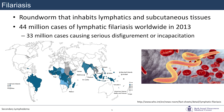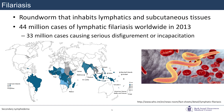On filariasis: we don't see this in the U.S. It's a roundworm that inhabits lymphatics and subcutaneous tissues, transmitted through a mosquito. Depending on where you practice, you may see it. Given the world is shrinking and there's a lot of immigration, you're going to have patients that have lived in areas including parts of South America, Sub-Saharan Africa, Southeast Asia, Indonesia, the Pacific, and the Caribbean. There are 44 million cases worldwide as estimated in 2013, with 33 million cases causing serious disfigurement and incapacitation.